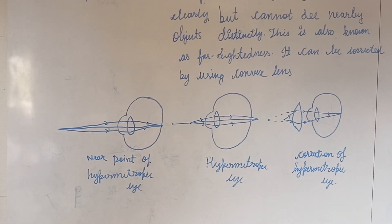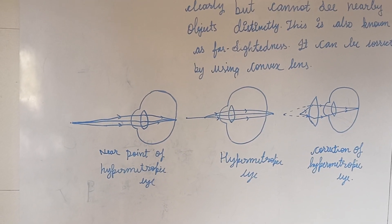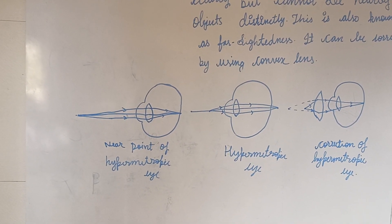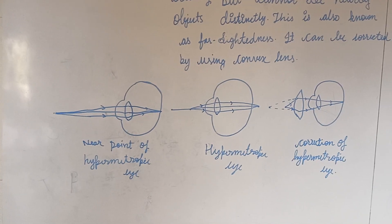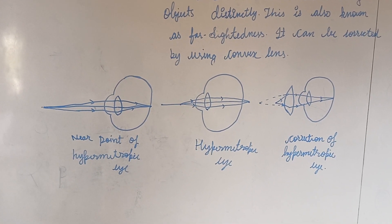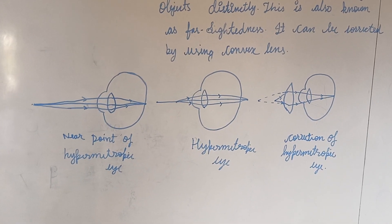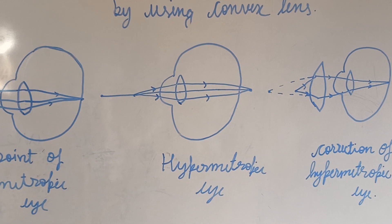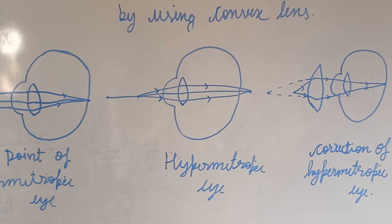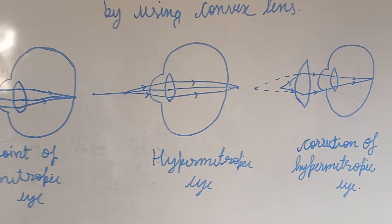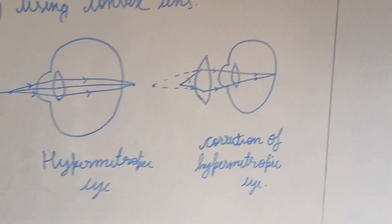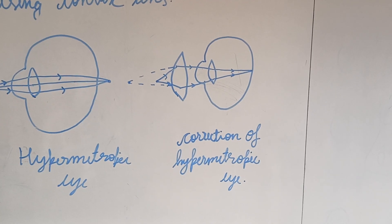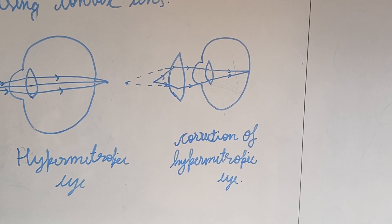The first diagram shows the near point of a hypermetropic eye, where rays are forming at the retina. The second diagram shows a hypermetropic eye with the defect of hypermetropia. The third diagram shows that it can be corrected by a suitable convex lens.